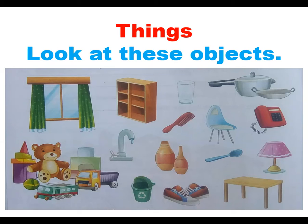Look at these objects. You can see different things in this picture. First of all you have curtains. The second one is Cupboard. The next one is Glass. The next one is Saucepan. And the next one is Pan. The next one is Candle.